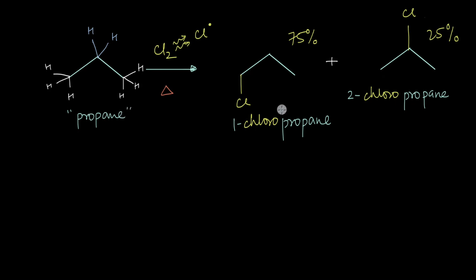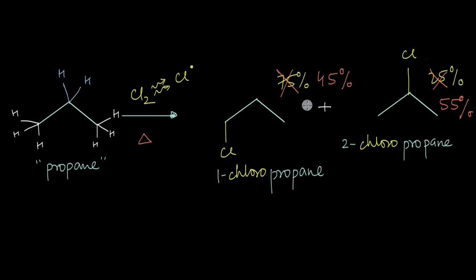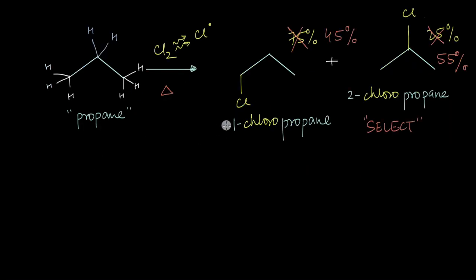However, when we actually carry out this reaction, we find that 1-chloropropane formed is not 75% but closer to 45%, while 2-chloropropane is 55%. So even though purely statistically 1-chloropropane should be the major product, in reality chlorination of propane yields 2-chloropropane as the major product — it seems to favor or select the 2-chloro product.